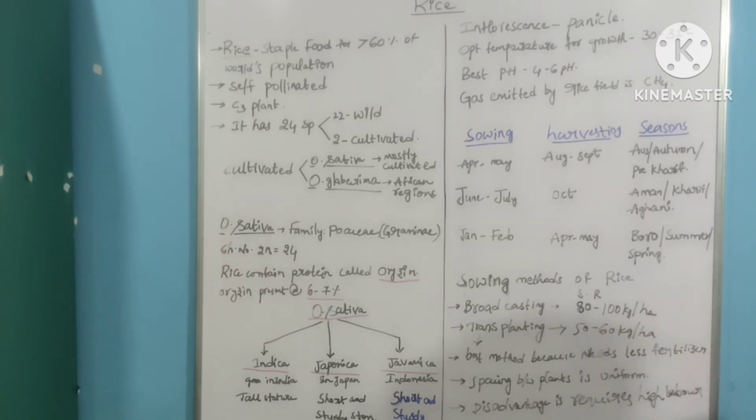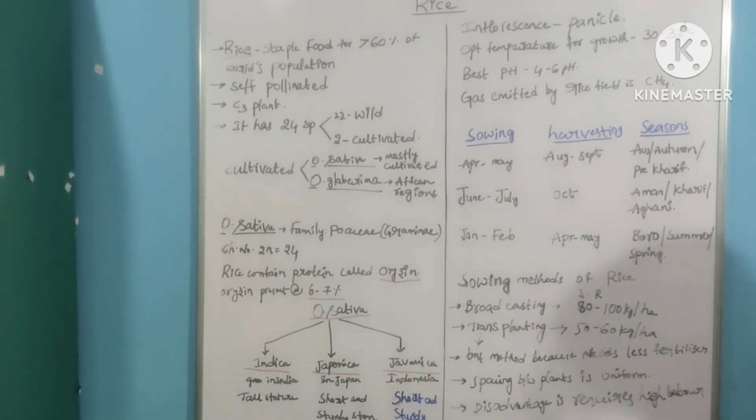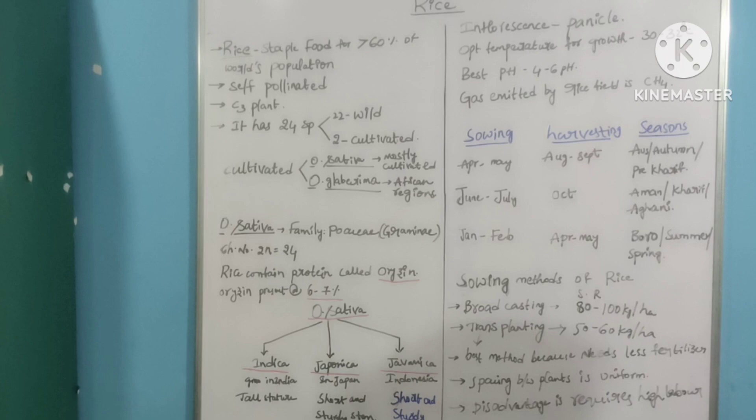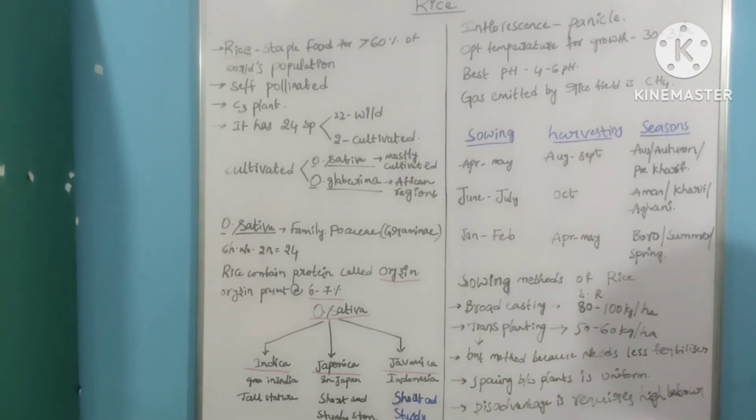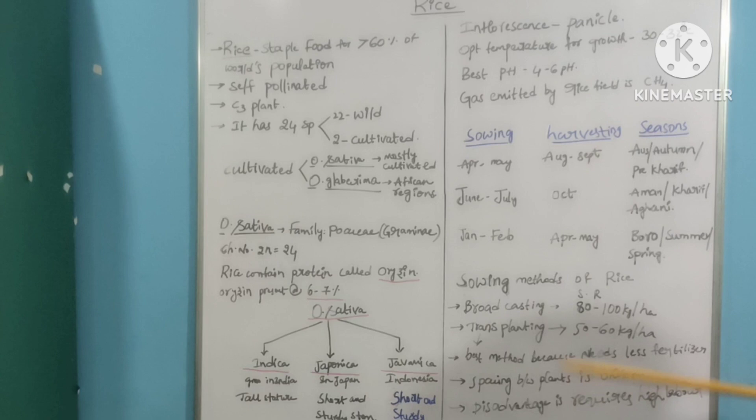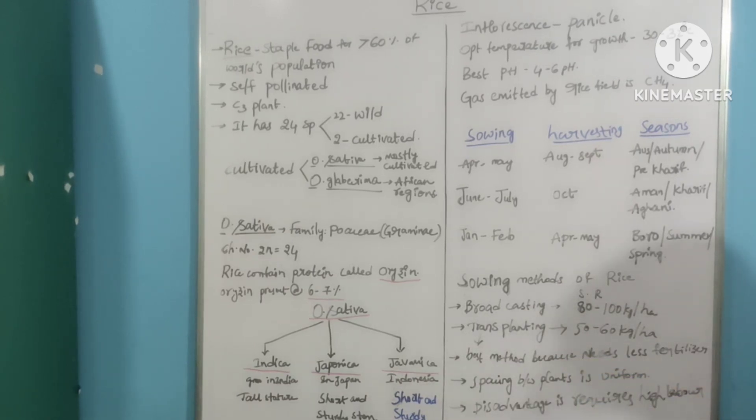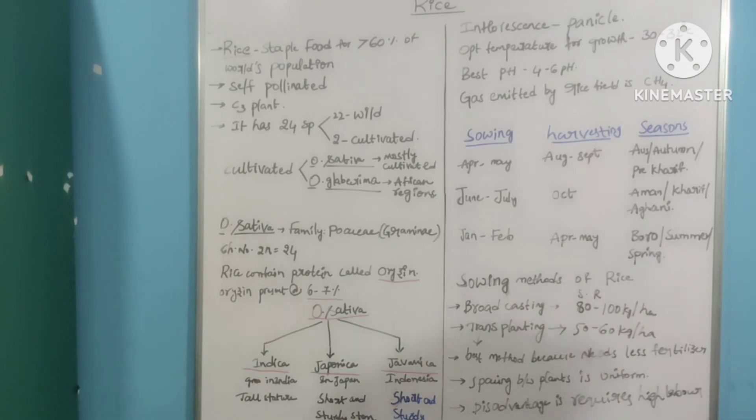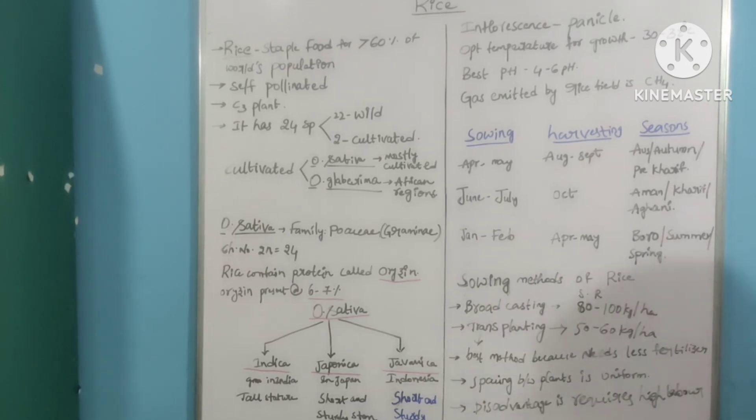The Oryza sativa is classified into 3 subspecies: indica, japonica, and javanica. As the name itself denotes, indica is cultivated in India, japonica is cultivated in Japan, and javanica is cultivated in Indonesia.